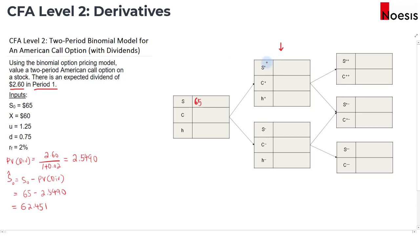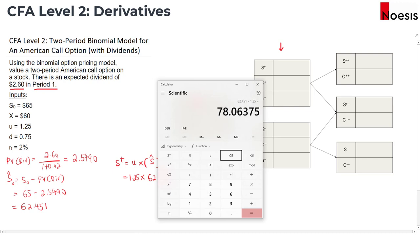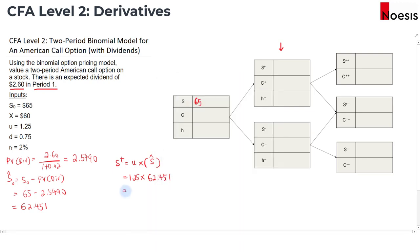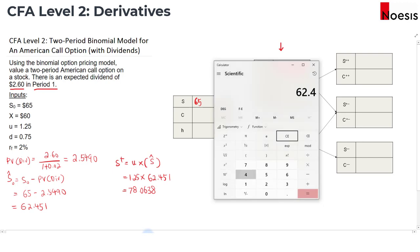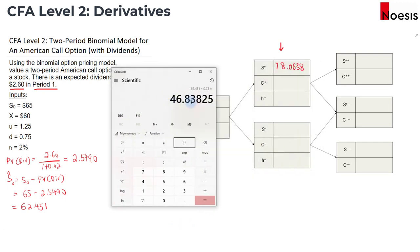Now let's compute the price when the share price goes up and goes down, which is S+ and S-. For S+, that will be the up factor times the adjusted price — 1.25 multiplied by 62.451, which gives us 78.0638. For S-, that will be 62.451 times 0.75, the down factor, which gives us 46.8383.